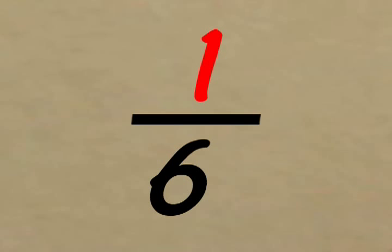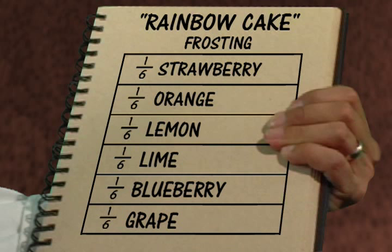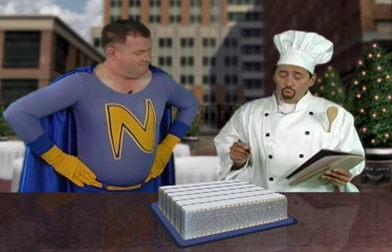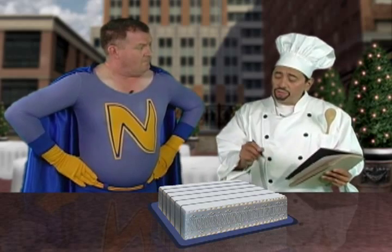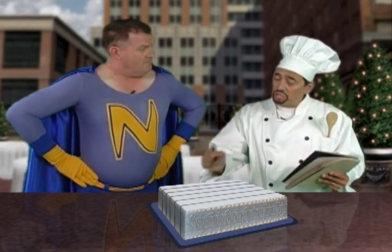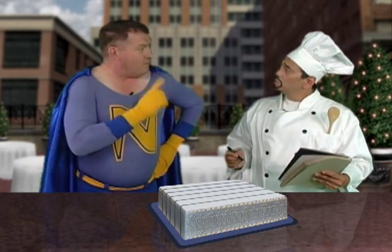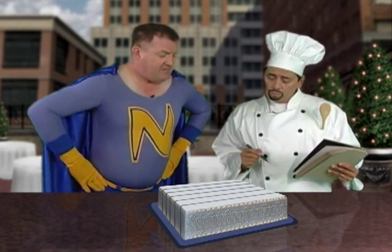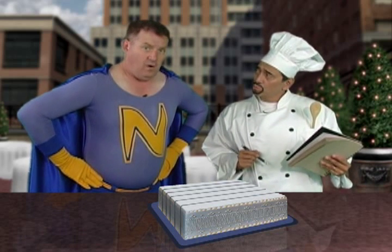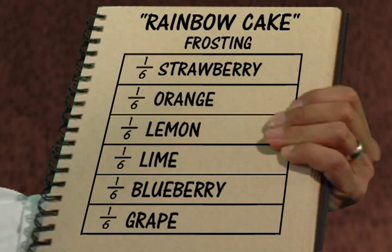The top number — the numerator — tells you how many out of each piece. See, it says one out of six should be strawberry. So I should put strawberry frosting on one of these six pieces? That's correct. One-sixth of the cake needs to have strawberry frosting.